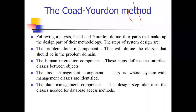The Coad-Yourdon method defines four parts that make up the design portion of their methodology: the Problem Domain Component, the Human Interaction Component, the Task Management Component, and the Data Management Component. These are the four steps of system design in the Coad-Yourdon method.